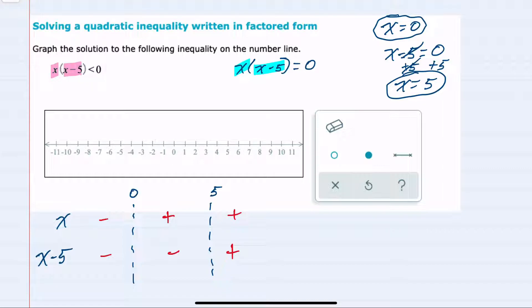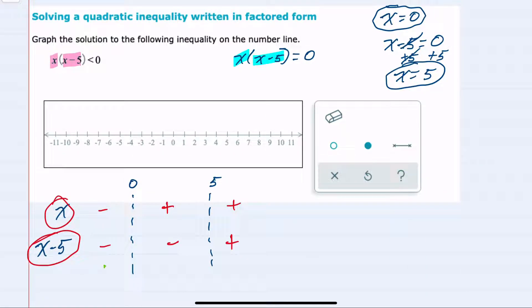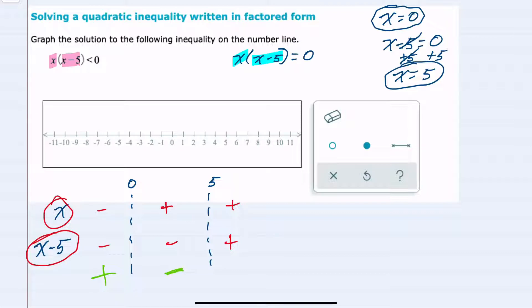And now that I know what's happening for each one of these factors over these different ranges, if I am multiplying them, then a negative times a negative would be positive. A positive times a negative would be negative. And then a positive times a positive would be positive.